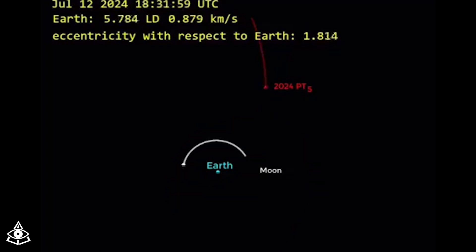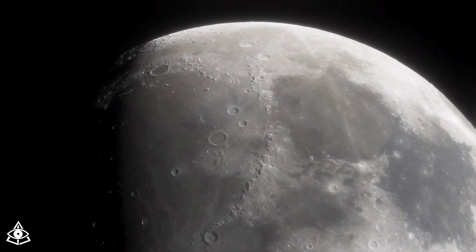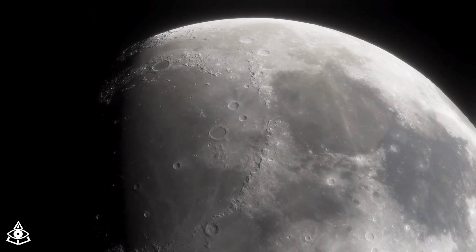The presence of mini-moons is not a common occurrence. In this case, asteroid 2024 P-5 was captured by the gravity of our planet, and experts believe that there is a strong possibility that this is a fragment detached from the Moon due to a past impact.